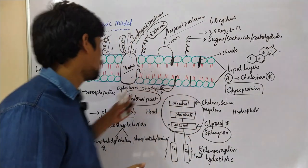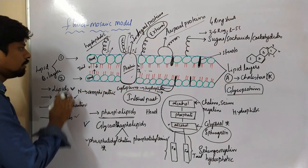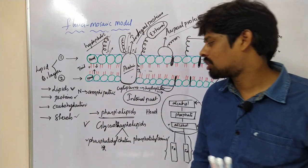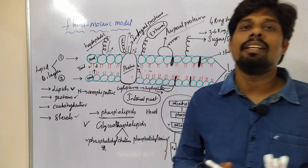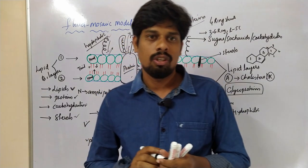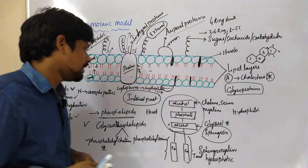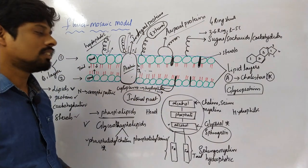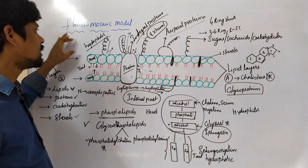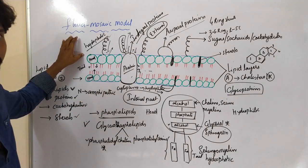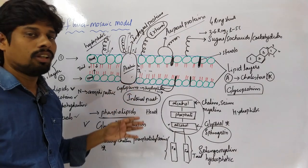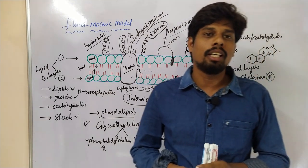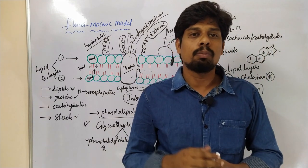This is all about sterols, carbohydrates, proteins, and lipids present in the plasma membrane of the Fluid Mosaic Model, postulated by Singer and Nicolson in 1972. The plasma membrane is arranged due to many reasons, and there is selective permeability and fluidity.